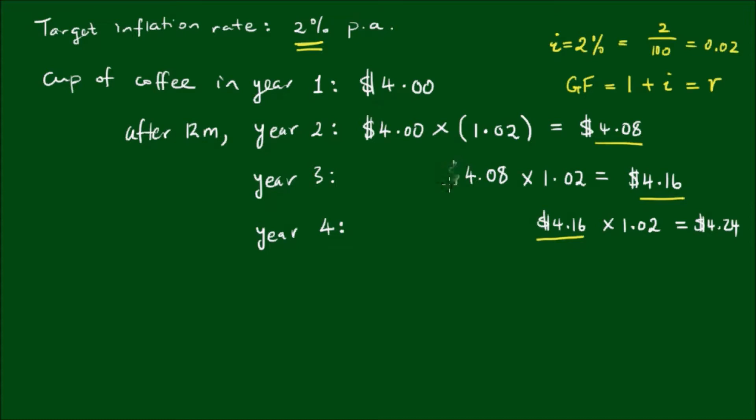Let's write $4.16 here. That is the starting price in year three, or the ending price in year two, multiplied by the growth factor of 1.02. I should say that this is a 2% increase per 12 months. Similarly, for year four, we have $4 by 1.02, by 1.02, and multiplied by another 1.02 to get $4.24.